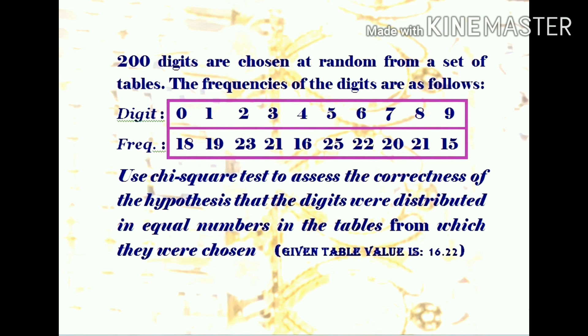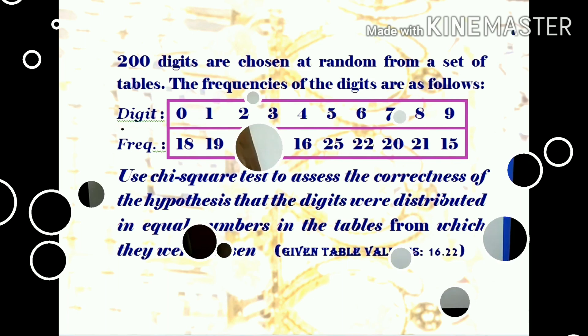0 appears 18 times, 1 appears 19 times, 2 appears 23 times and so on. Finally, 9 appears 15 times. We have to test using chi-square test whether the digits are distributed in equal numbers.